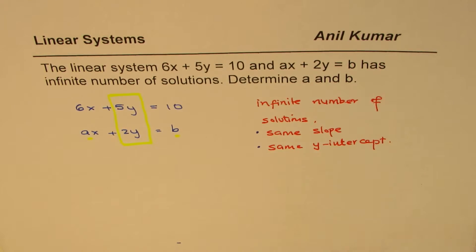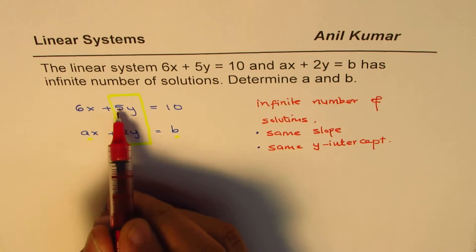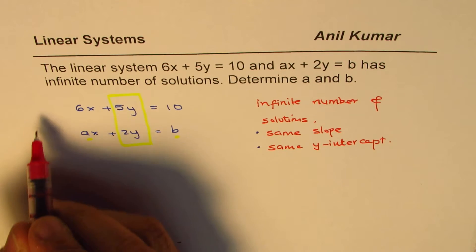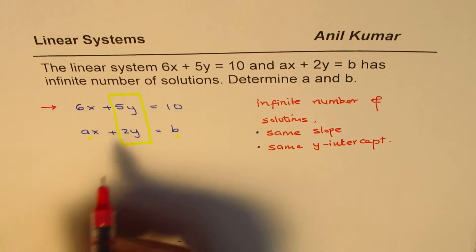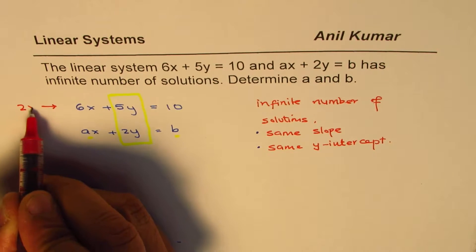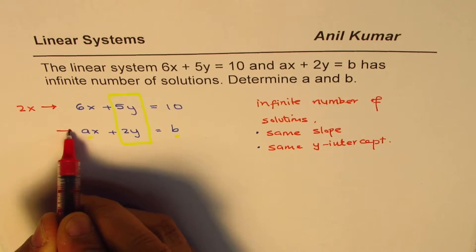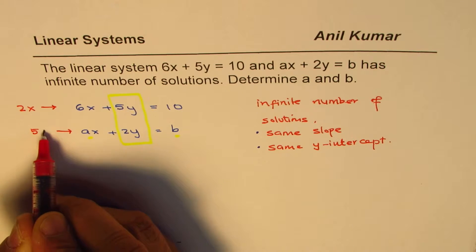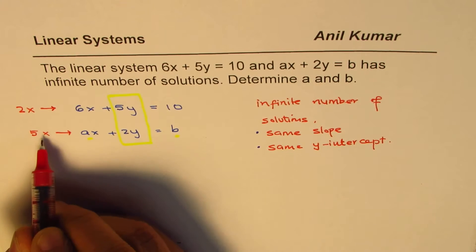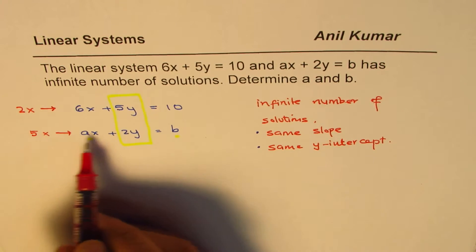Now in order to make them the same, what we can do is we can multiply the first equation by two, we can do times two, and the second equation by five times five. This is not x, this is times five.